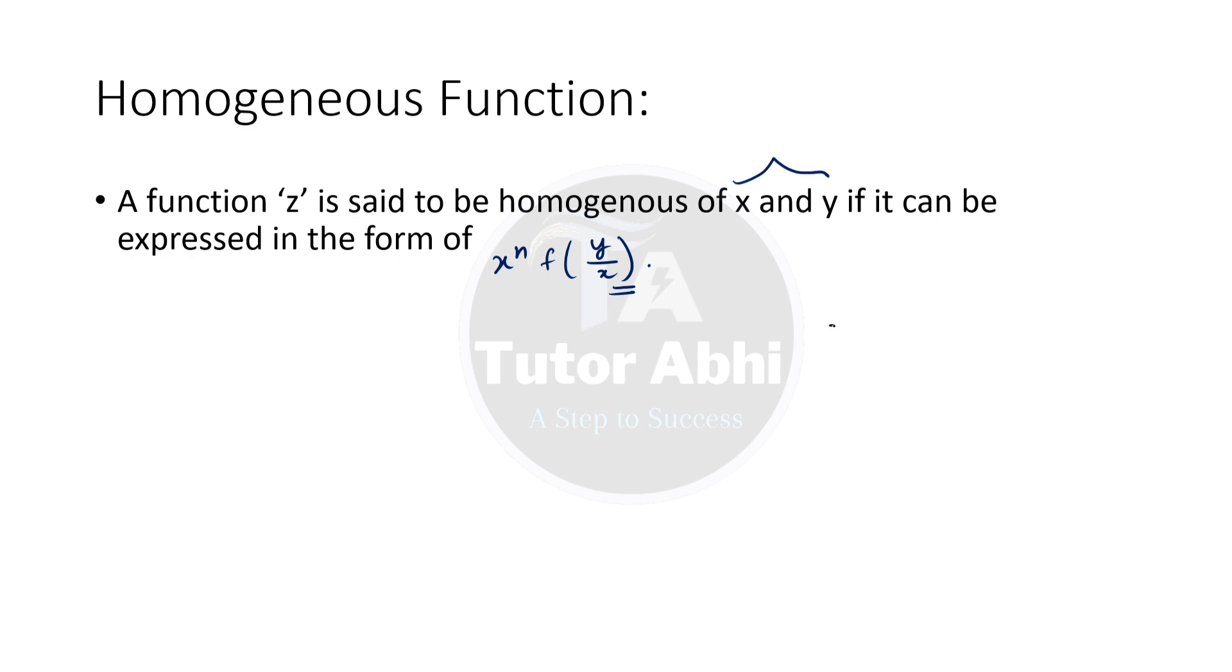Similarly, z is a function of x and y. We will say it's a homogeneous function of x and y if it can be expressed in the form x to the power n times function of y upon x. We use n, and the order or degree is n.